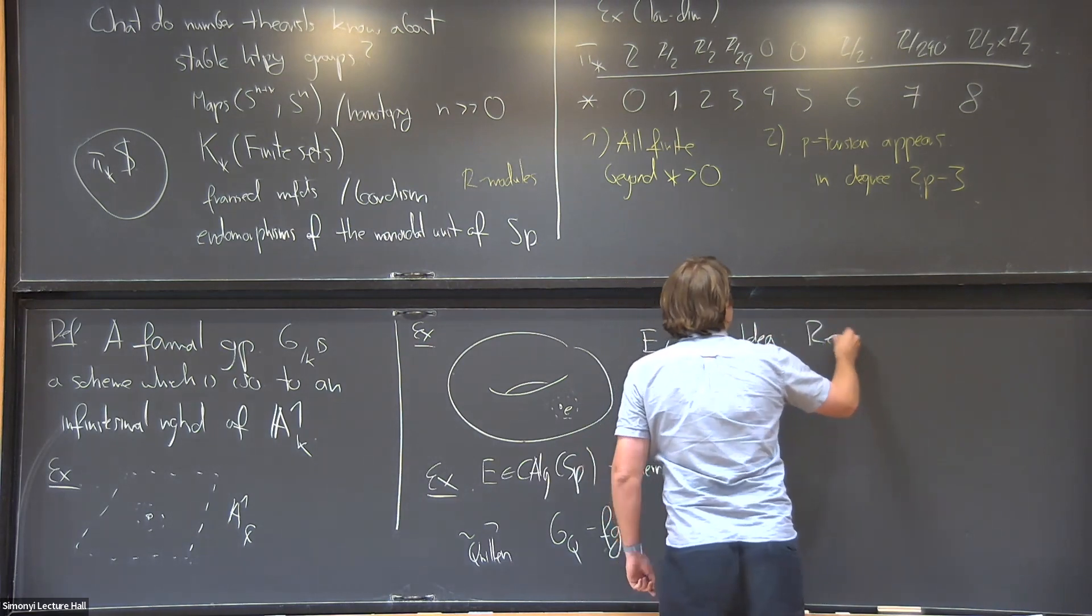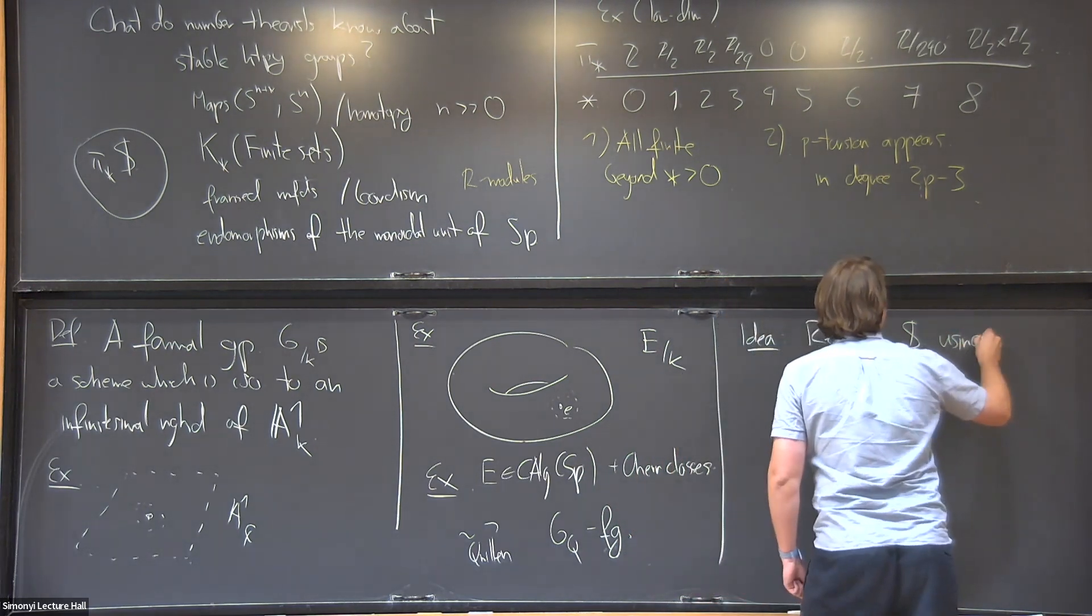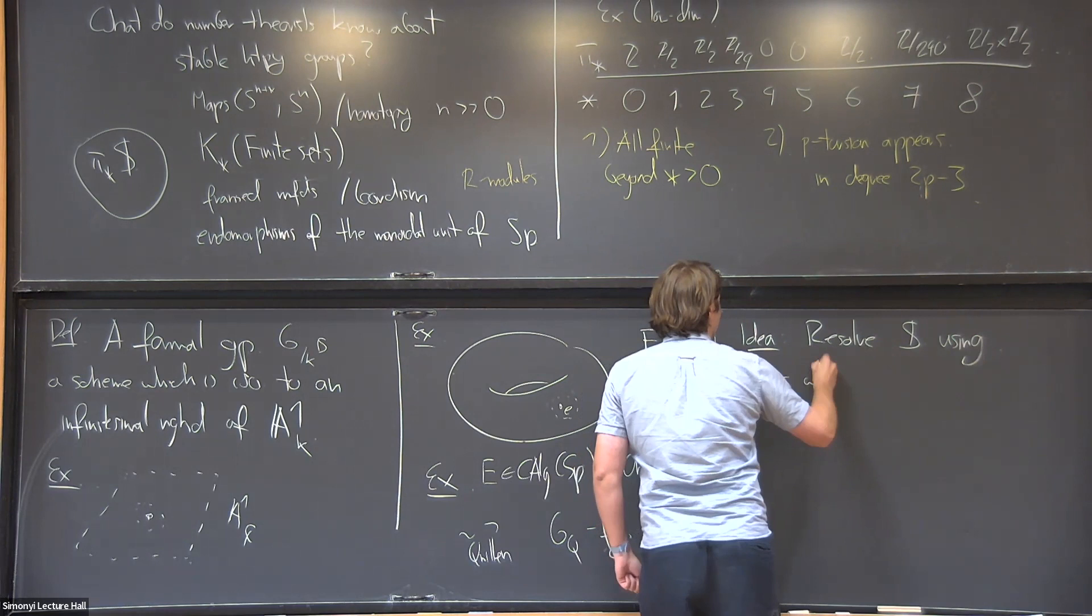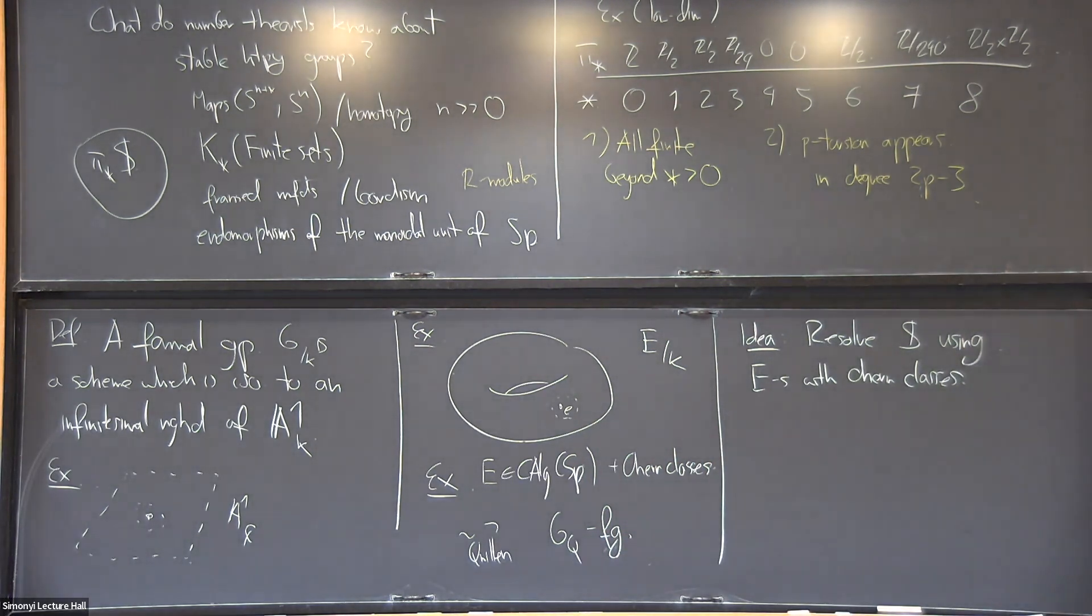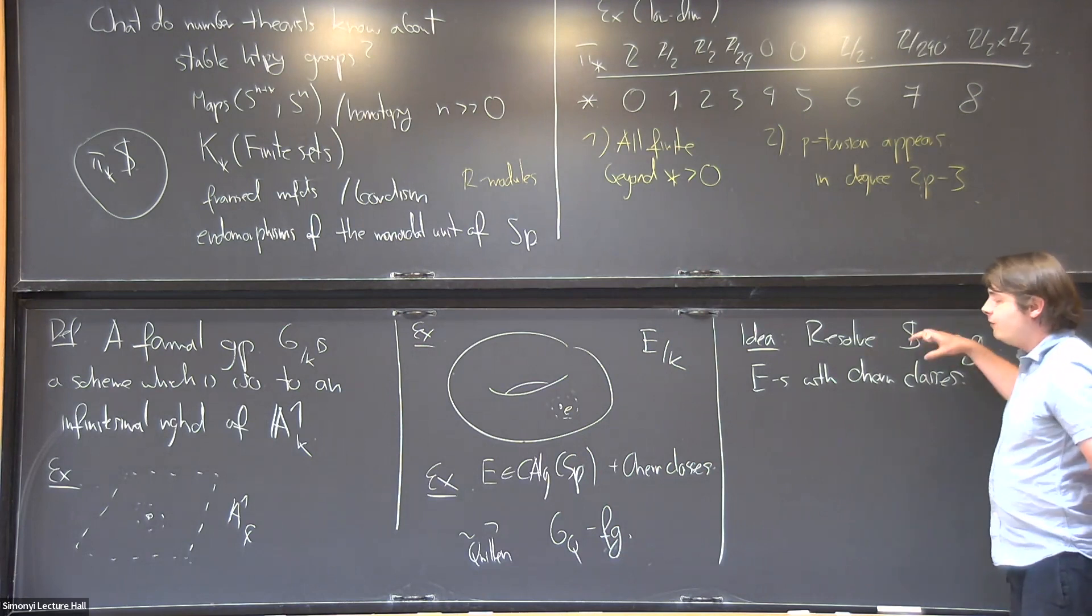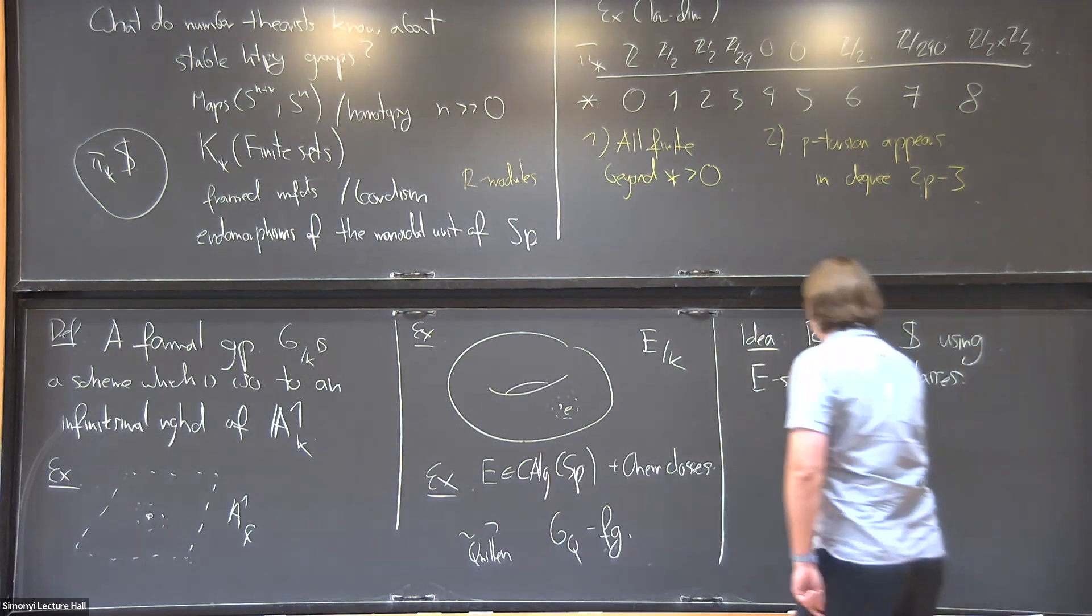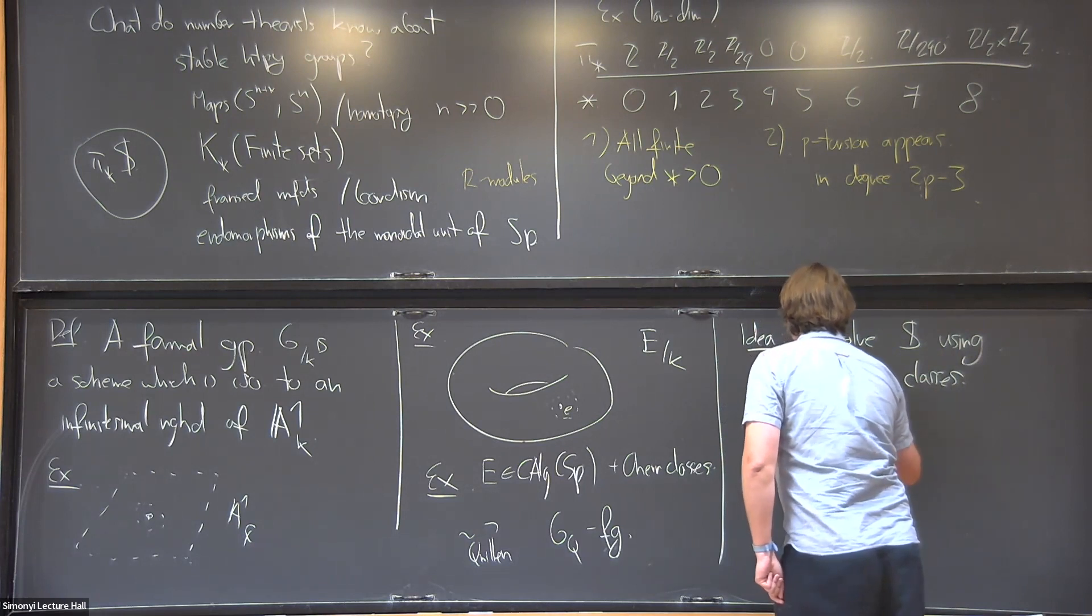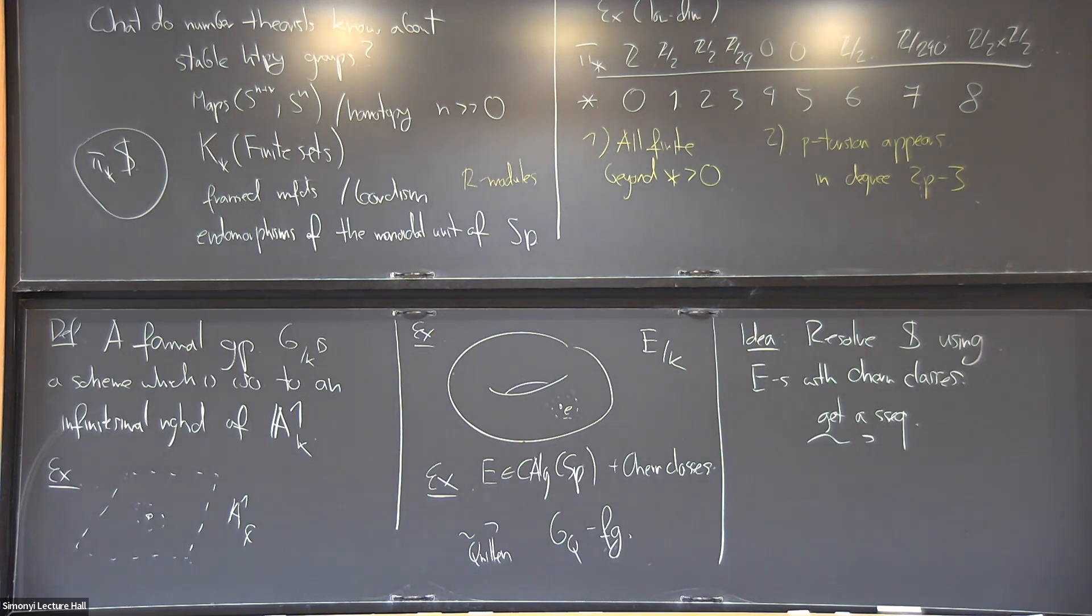Unfortunately the sphere is not... I mean life is never that easy. The sphere is not that nice. There is no theory of Chern classes in stable homotopy groups. But what we can do is we can resolve the sphere as a ring using a homology theory with Chern classes. If you think of these dually, these are coordinate rings of some notion of a scheme. We're already finding covers of the sphere with a fine scheme associated very nicely to E's we can actually compute. And from that we get a spectral sequence.